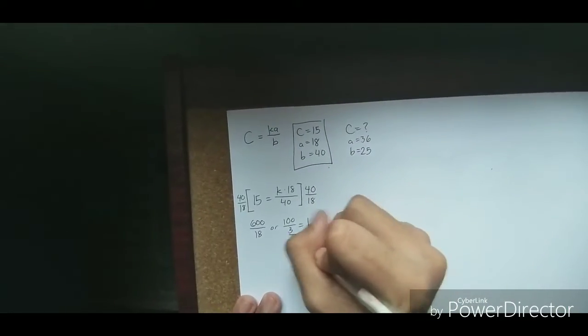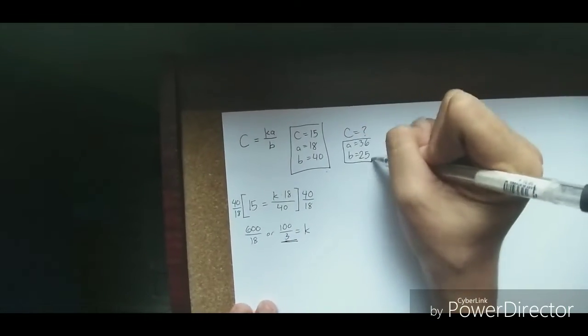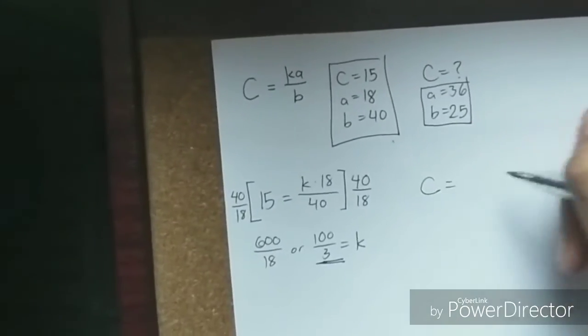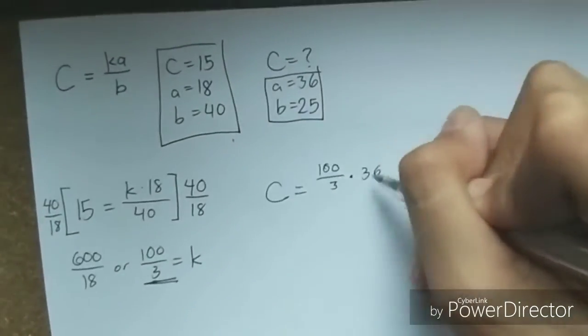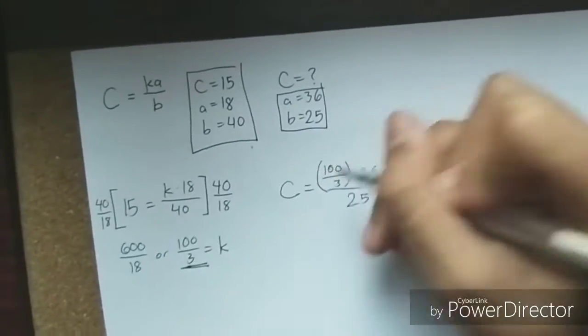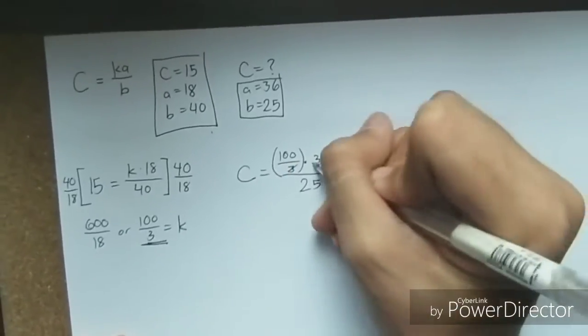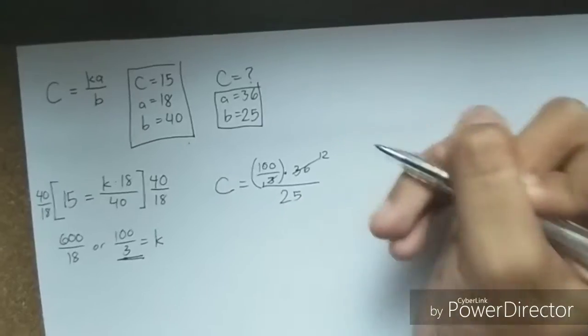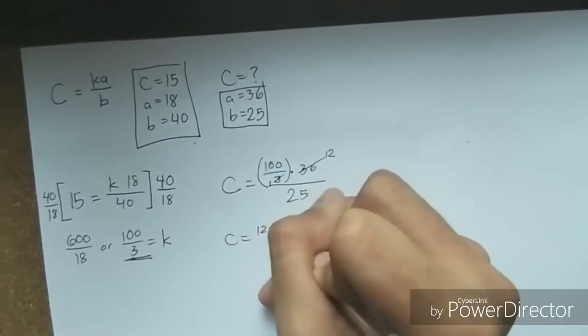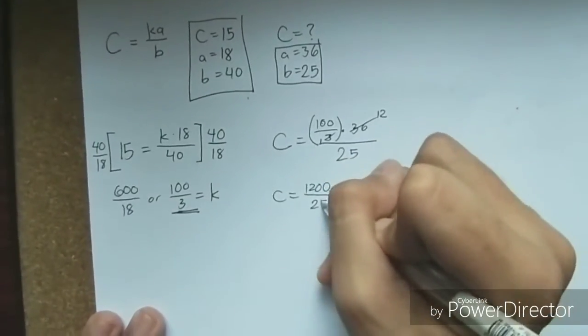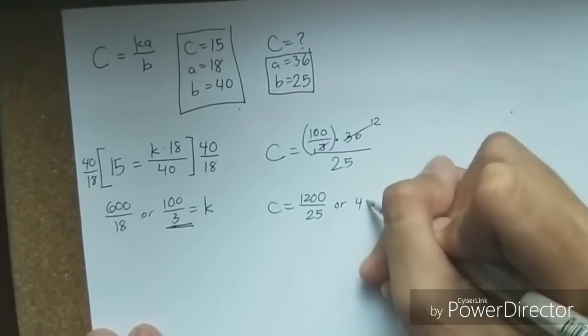Now, we substitute this into our equation, as well as 36 and 25 to get something like this. We can simplify 3 and 36 to 1 and 12 respectively, which gives us a value of 1,200 all over 25 or 48, which is our new value for C.